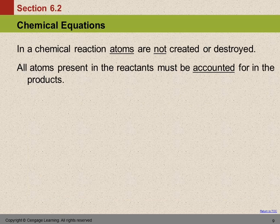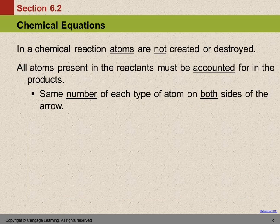And sometimes it's not exactly obvious where those atoms went, but if you investigate you'll find out they're there somewhere. In the equation we have to have the same number of each type of atom on both sides of the arrow.